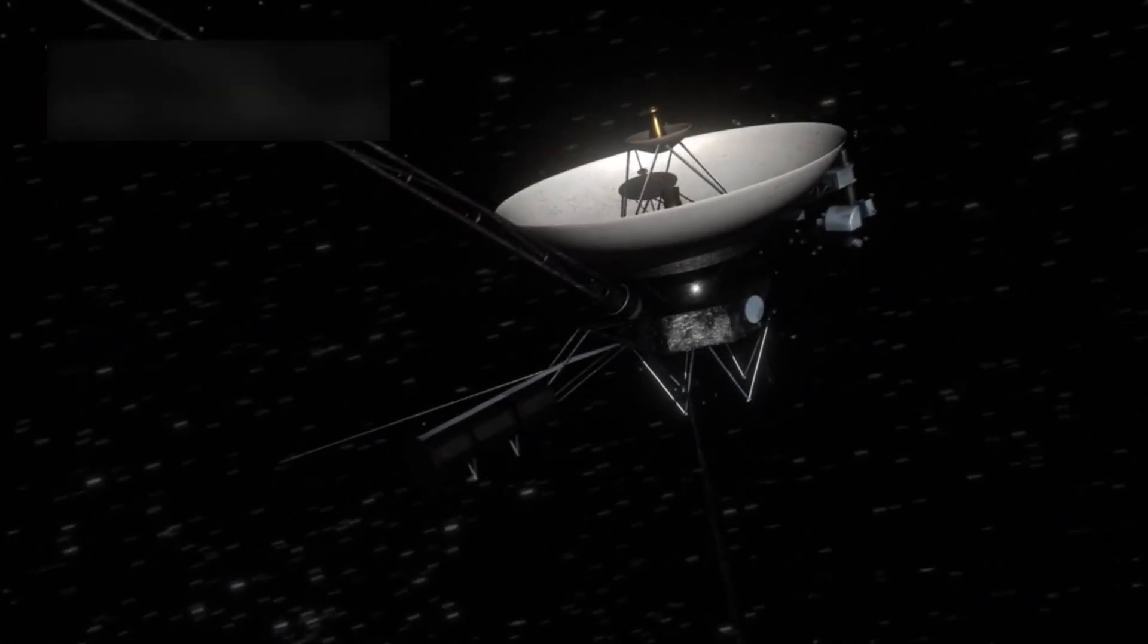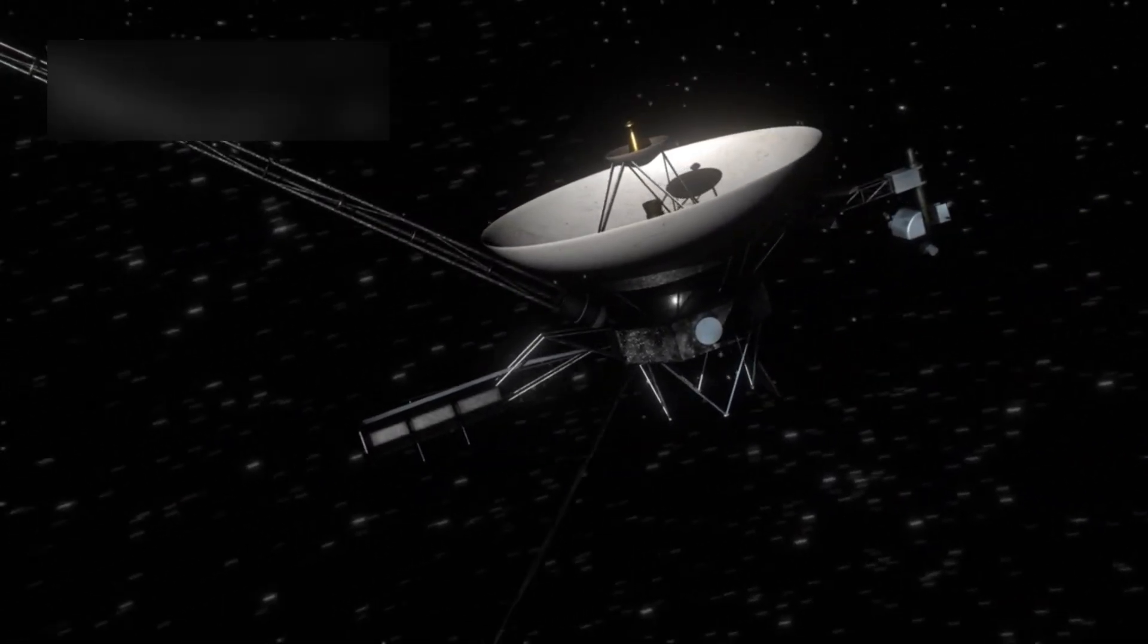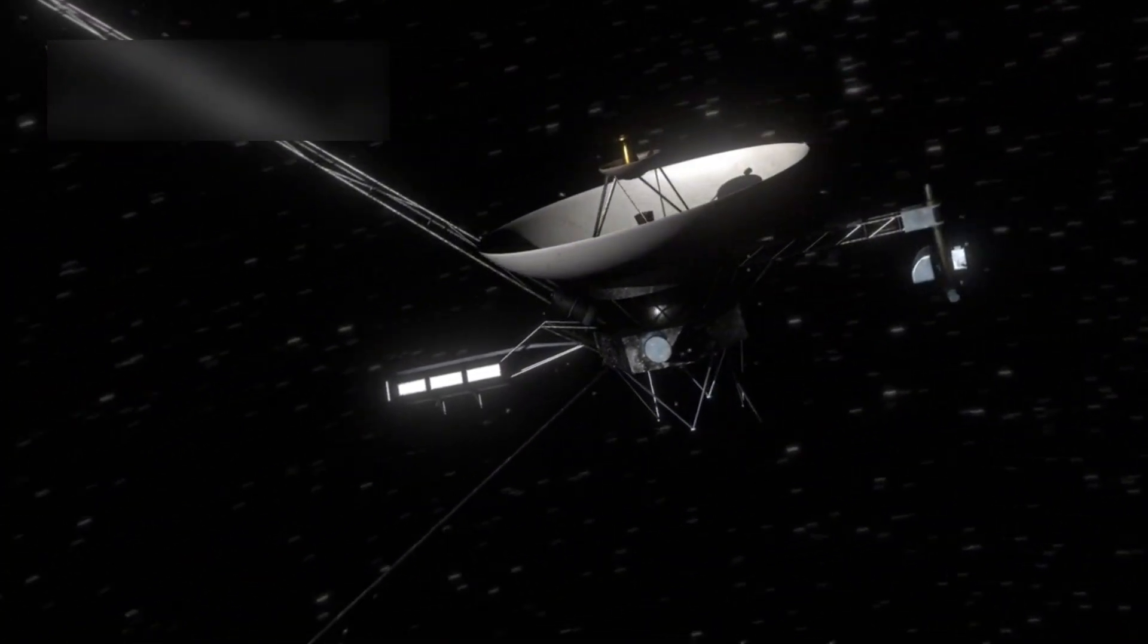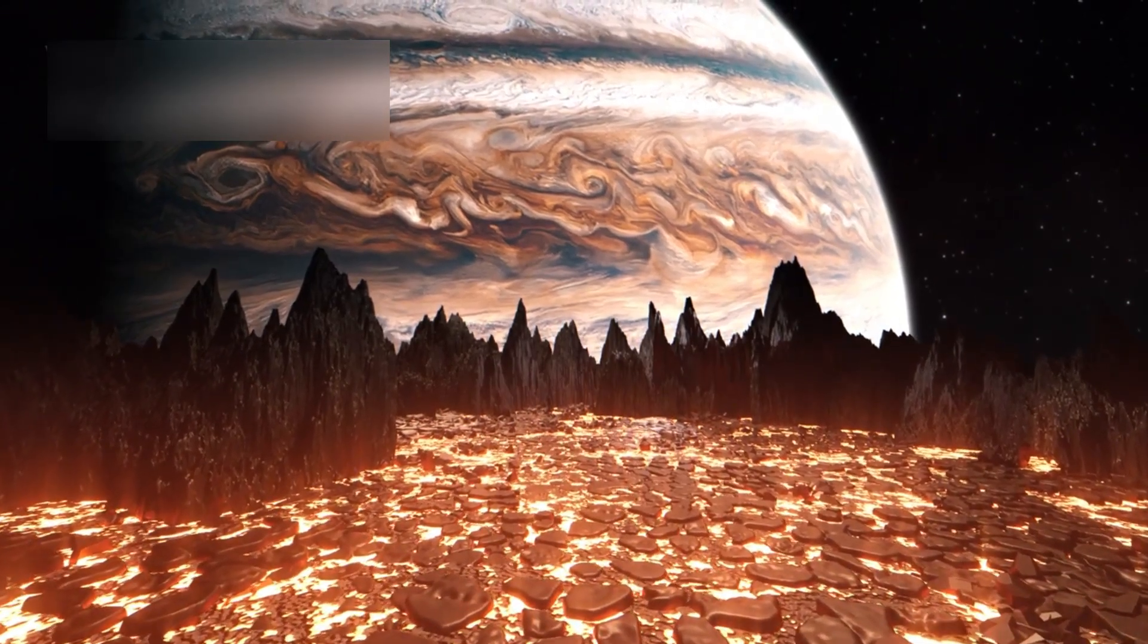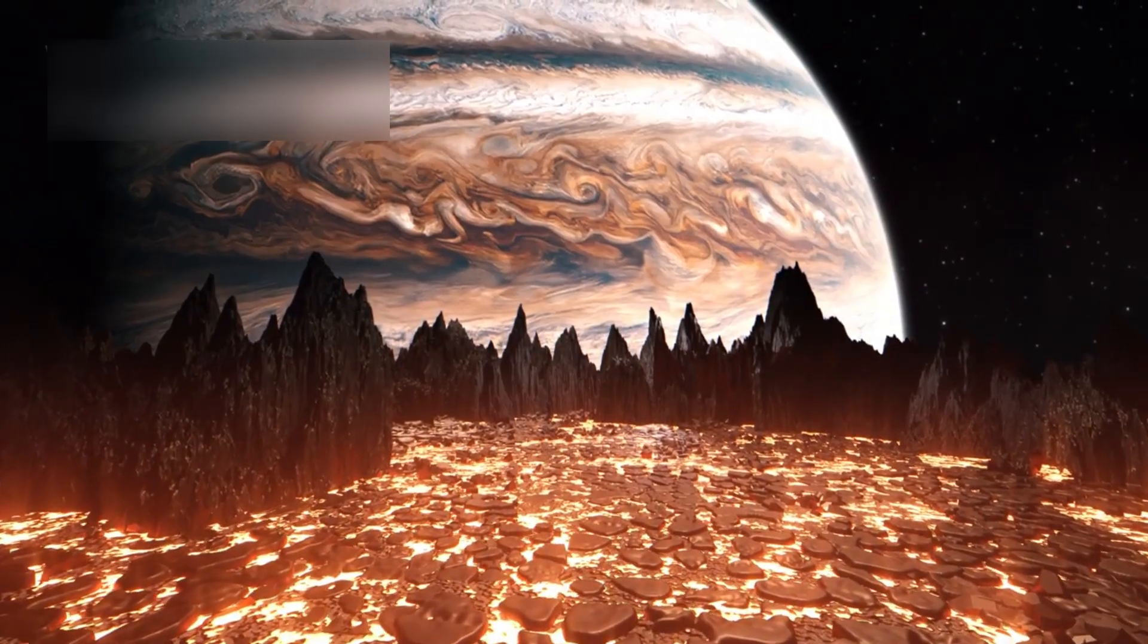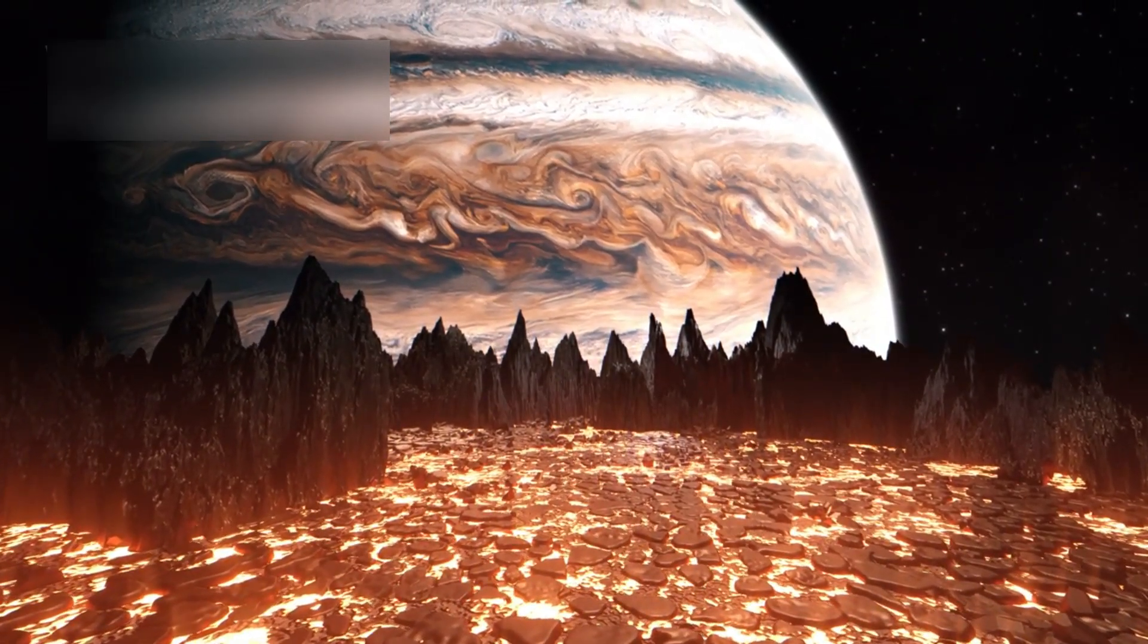Its close-up images of Jupiter's storms and Saturn's rings transformed how we see the outer solar system. It even discovered volcanic activity on Jupiter's moon Io, which was the first time active volcanoes were seen beyond Earth.